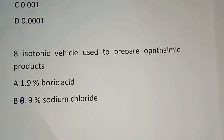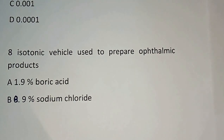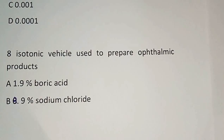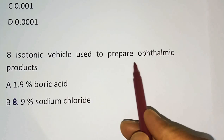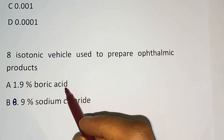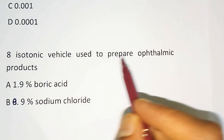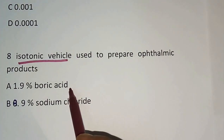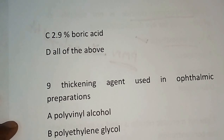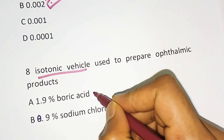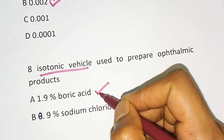Next question: which isotonic vehicle is used to prepare ophthalmic products? Options are: 1.9% boric acid, 8.9% sodium chloride, 2.9% boric acid, or all of the above. The correct answer is 1.9% boric acid.